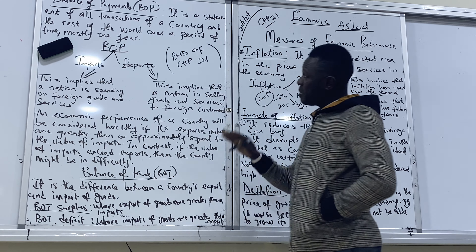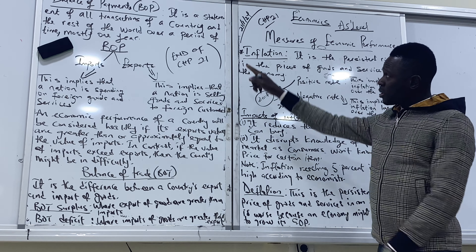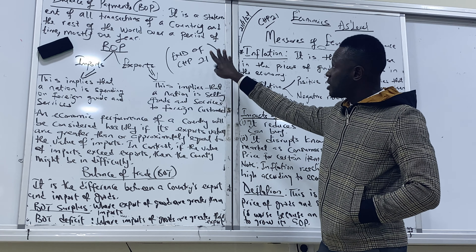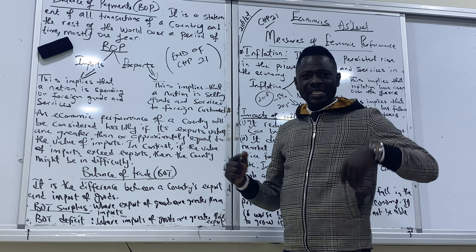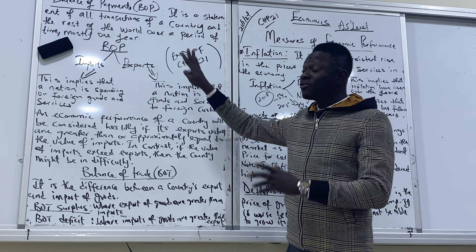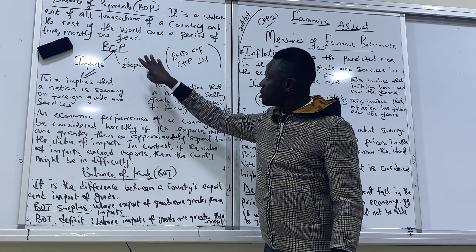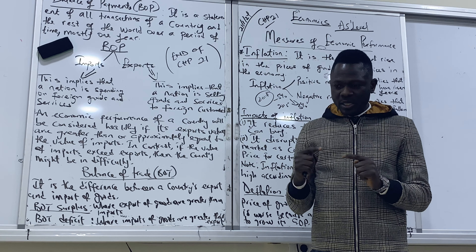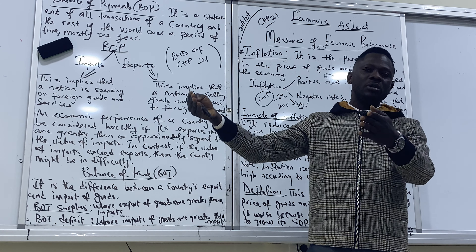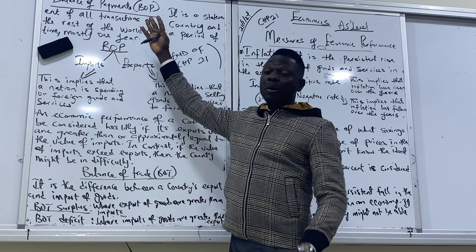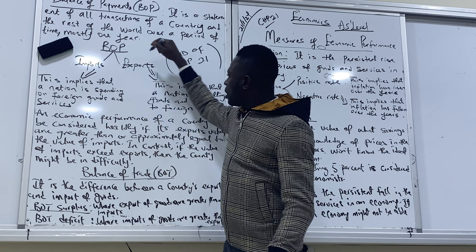That takes us to balance of payments. Balance of payments is the statement of all transactions of a country with the rest of the world over a period of time, mostly one year. What is being produced in a country is either being exported or we are importing to the country — our transactions between a country and the rest of the world is called the balance of payments.